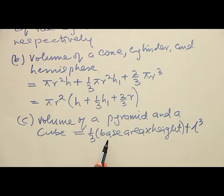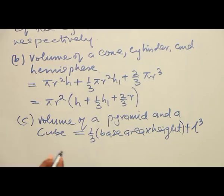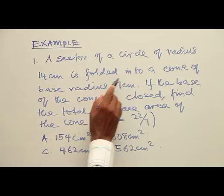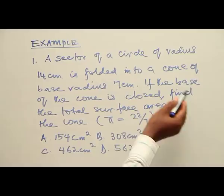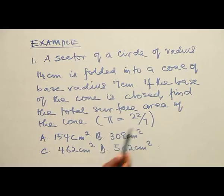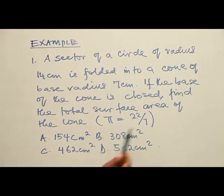We shall now go into examples. Example number one: A sector of a circle of radius 14 cm is folded into a cone of base radius 7 cm. If the base of the cone is closed, find the total surface area of the cone. Given pi equals 22 over 7. Options: A — 154 cm squared; B — 308 cm squared; C — 462 cm squared; D — 562 cm squared.